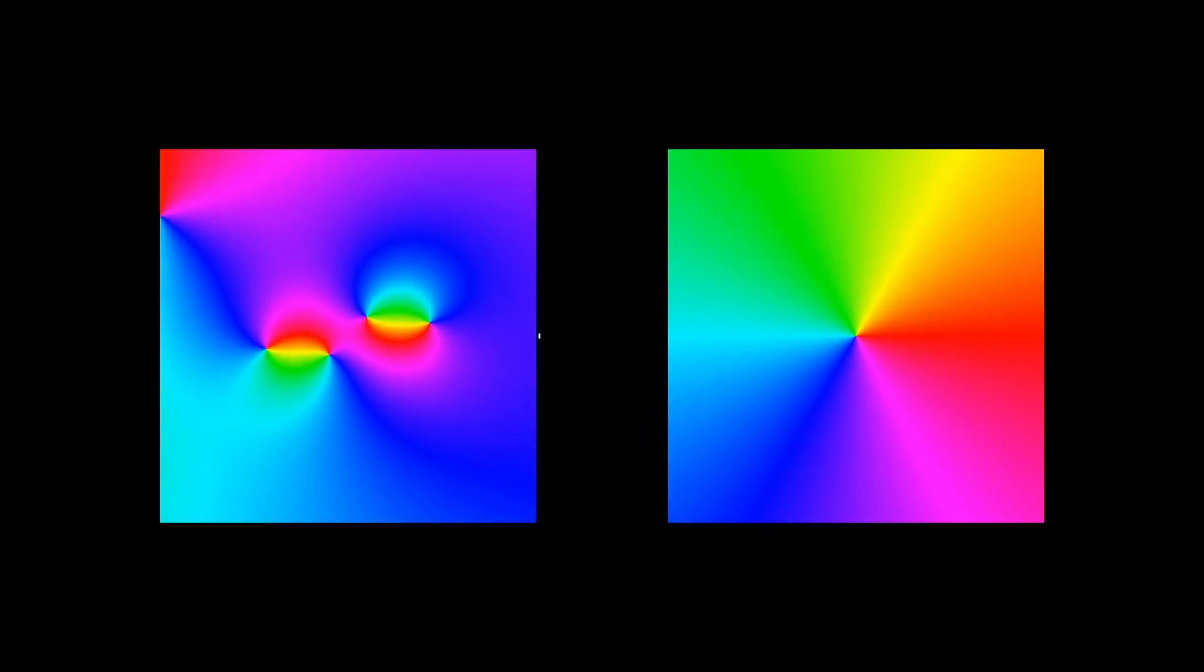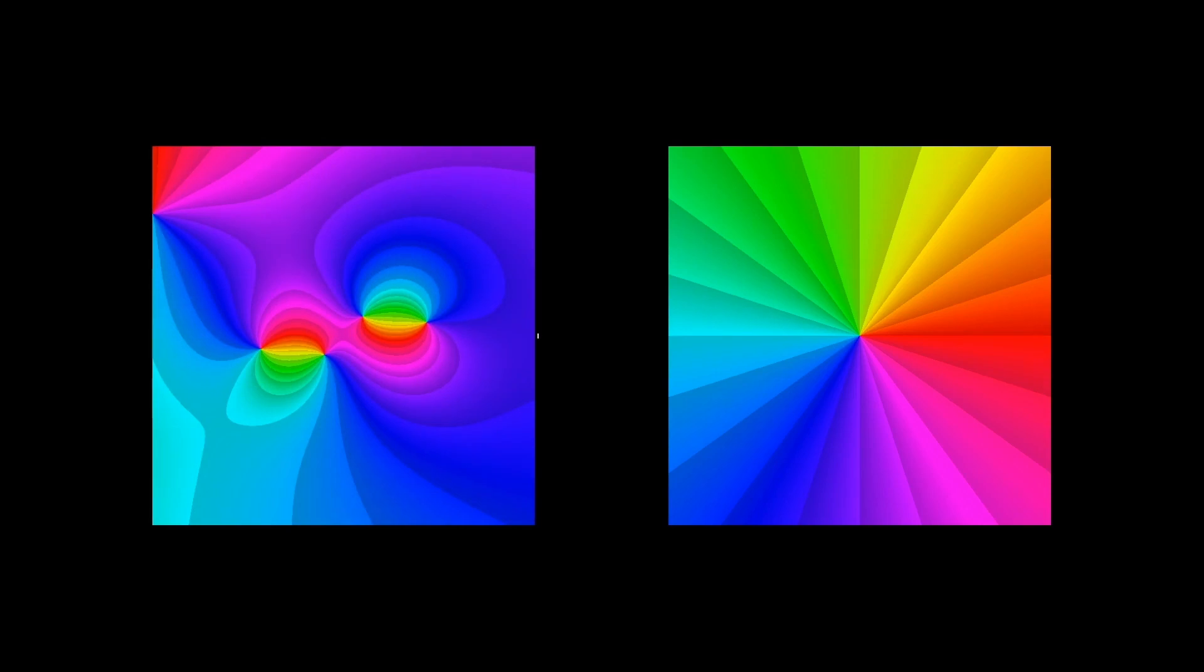Here we see again the formation of a phase portrait of a given function. Starting from the coloring of a w plane, we create the coloring of a z plane. If we use a different color scheme in the w plane, we get a different phase portrait of that function in the z plane.